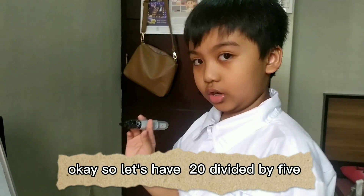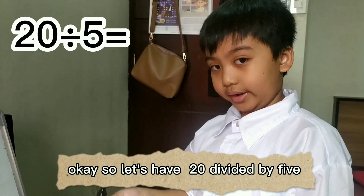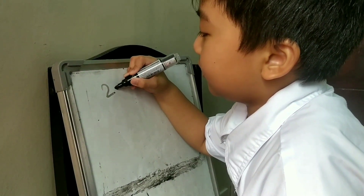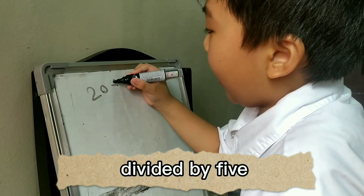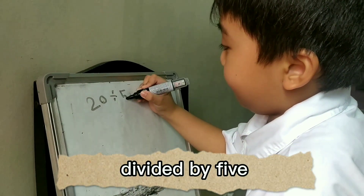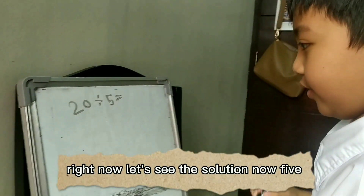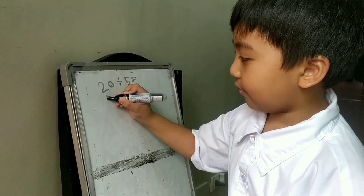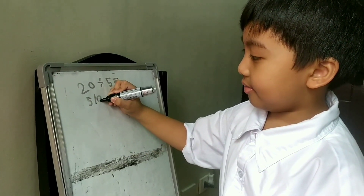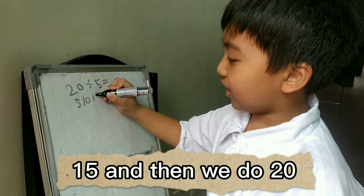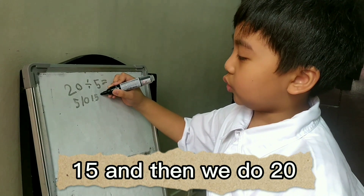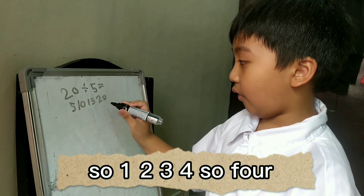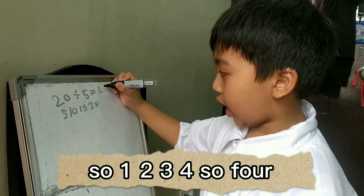Now let's have 20 divided by 5. Let's see the solution. Skip counting by 5's: 5, 10, 15, and then 20. So count: 1, 2, 3, 4. The answer is 4.